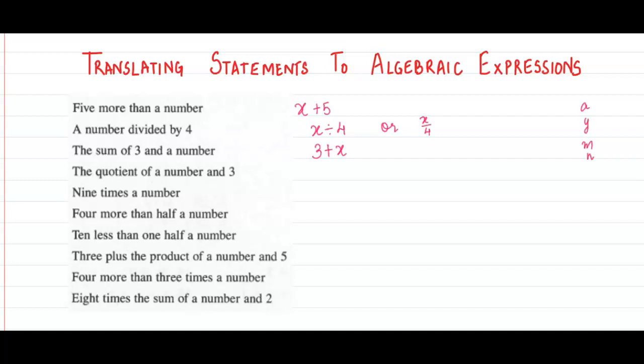So, quotient of a number and 3. That means x divided by 3, or x over 3.